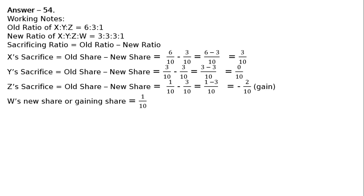W is the gaining partner — he is getting admission, getting a new share, and hence a gain of 1/10. Gaining ratio of Z to W is equal to 2:1. Sacrificing ratio is 3:0, meaning only X is sacrificing, with a sacrifice of 3/10.